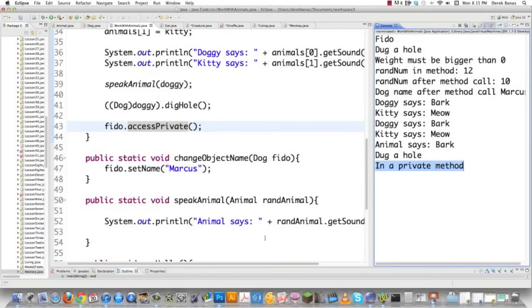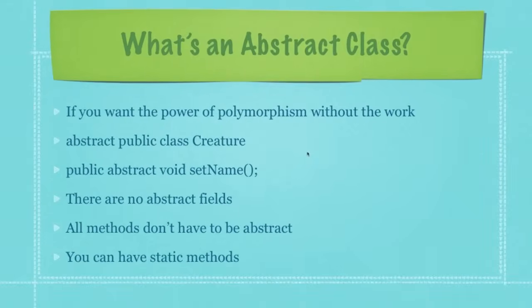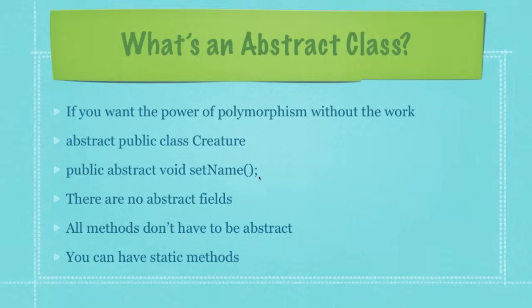Now we're going to create a draft from an abstract class. If you want the power of polymorphism without all the work, you use either an abstract class or an interface. To create an abstract class, you go abstract public class and whatever you want your class to be called. To create an abstract method, you put abstract before the return type and end it with a semicolon. There are no abstract fields — and not all methods inside an abstract class have to be abstract. In an interface, everything must be an abstract method. You can also have static methods inside abstract classes.